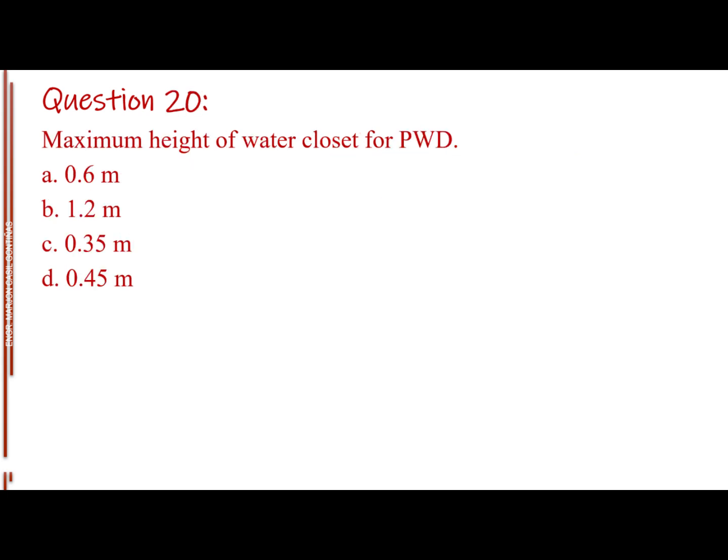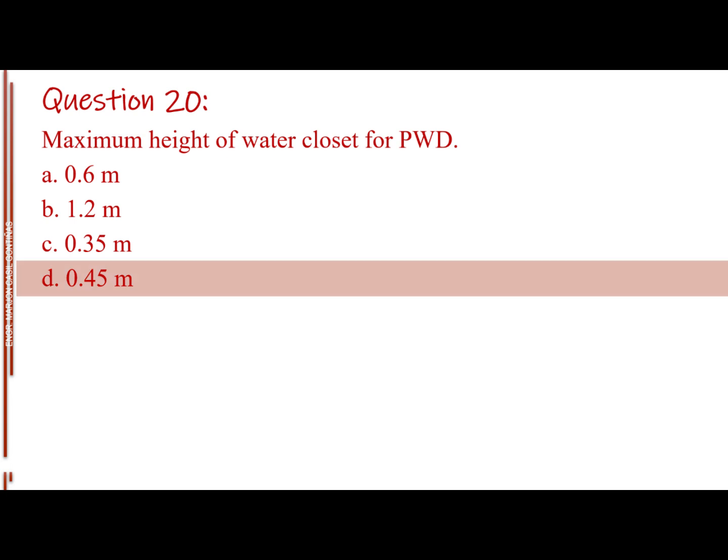Question number 20. Maximum height of water closet for PWD. Letter A, 0.6 meter. Letter B, 1.2 meters. Letter C, 0.35 meter. Letter D, 0.45 meter. The answer is Letter D, 0.45 meter.